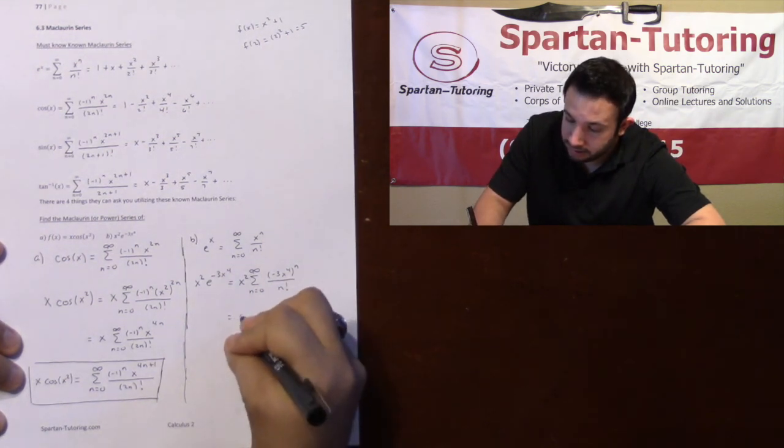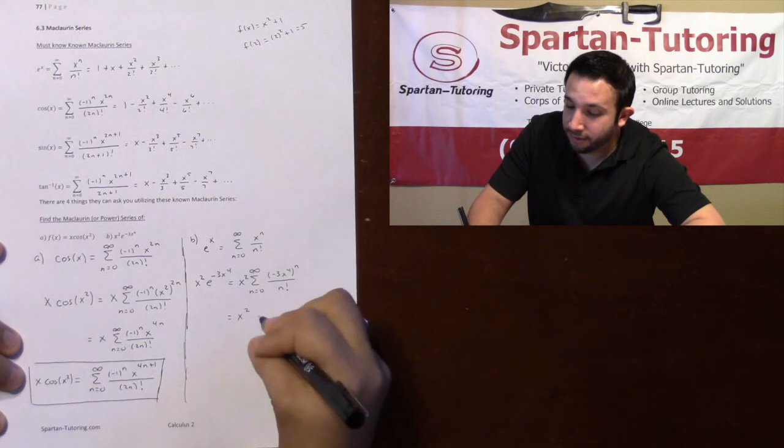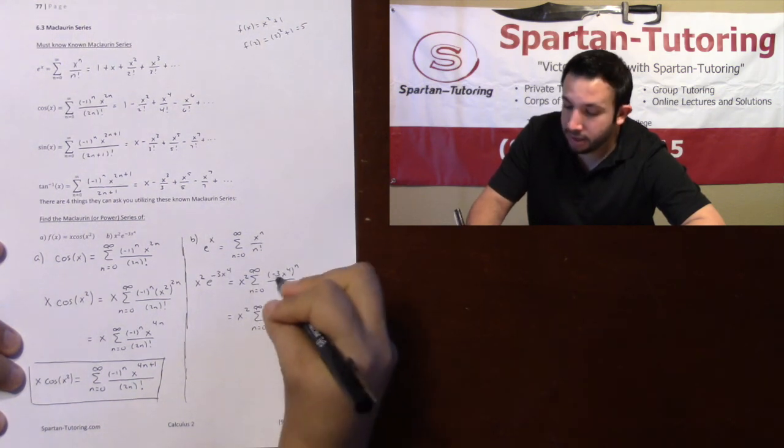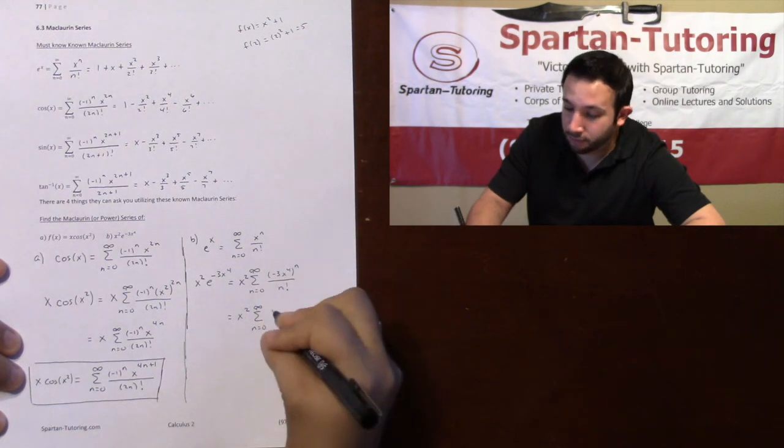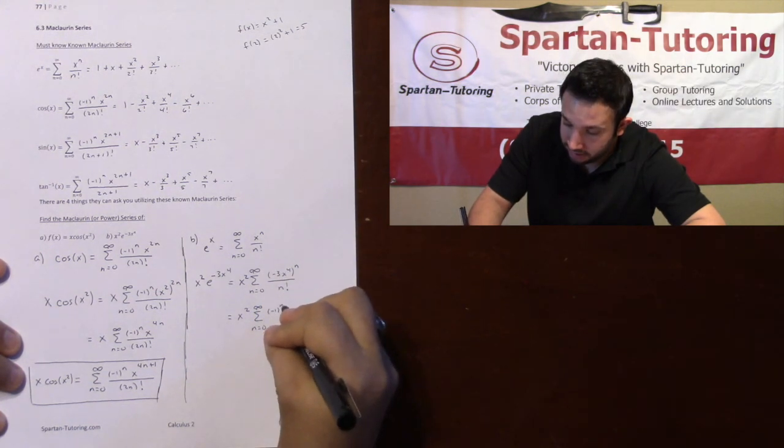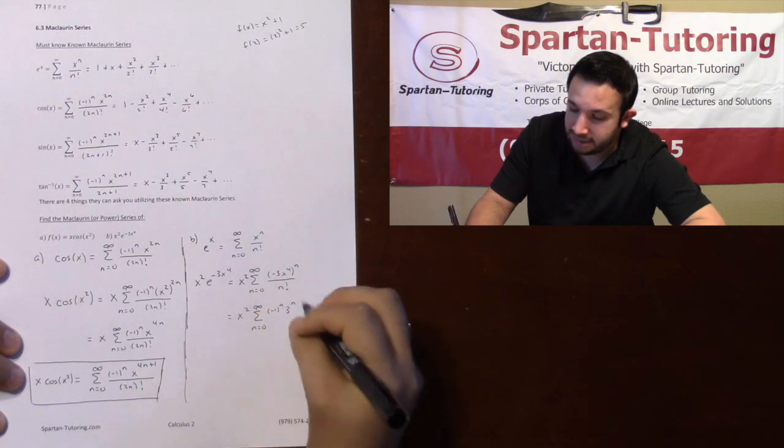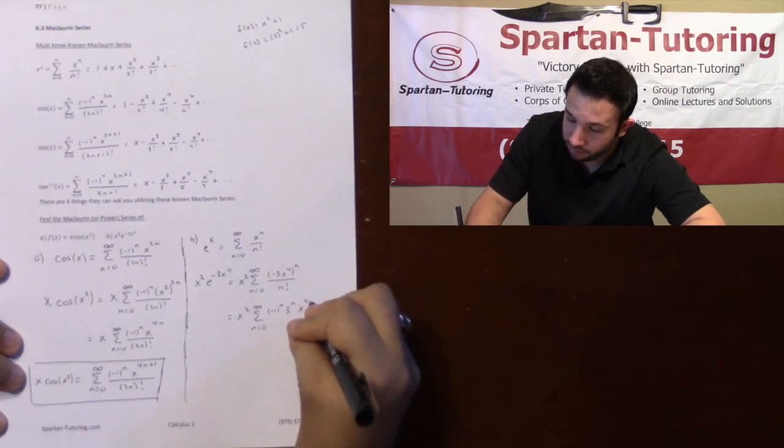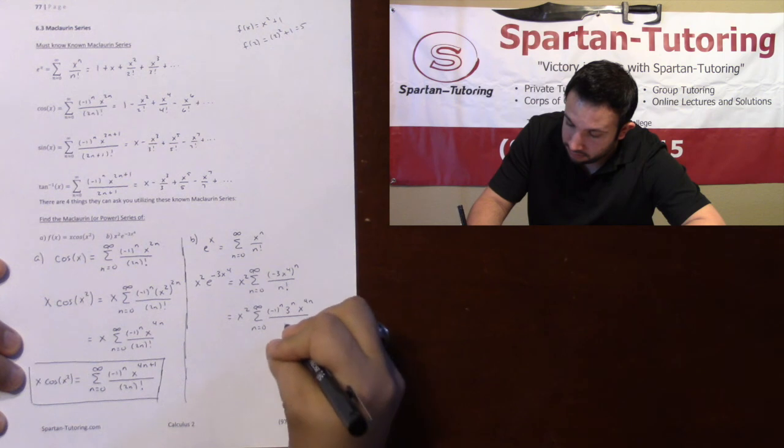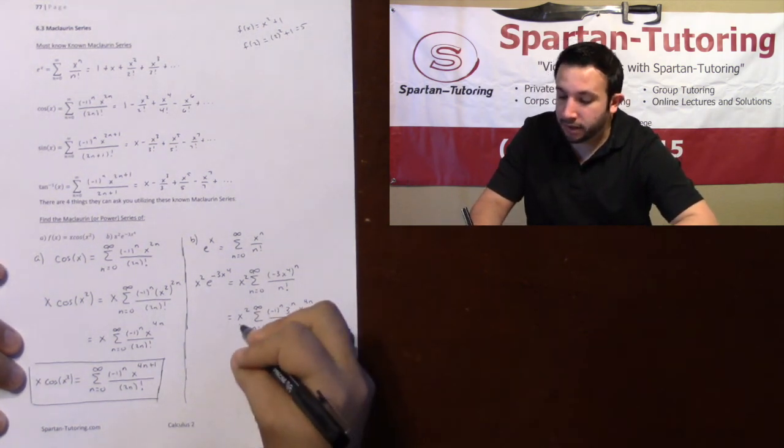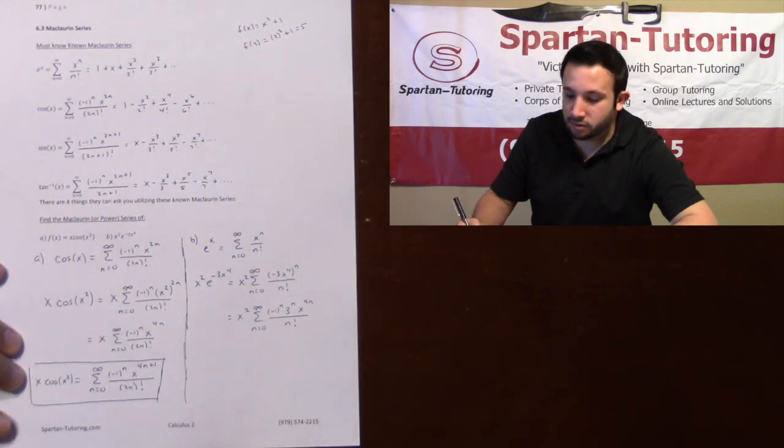So make sure you do the X squared on the outside of that as well. And what I'm going to do is I'm going to distribute that N into everything. What I mean by I need to distribute that N into everything, I'm distributing it into that negative 1. So I have a negative 1 to the N. I'm distributing it into the 3. That's 3 to the N. Into the X to the 4th. That's X to the 4N. All over that N factorial.